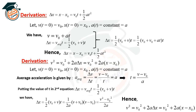Deriving the third equation of motion using the same initial conditions: substituting v = v₀ + at into the second equation in place of v gives Δx = v₀t + ½at². This is the third equation of motion.